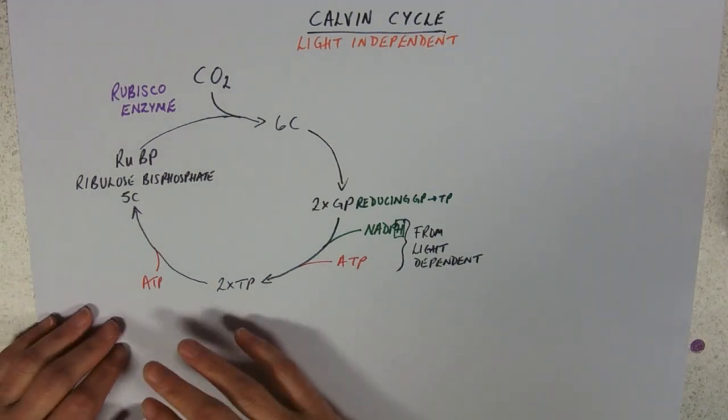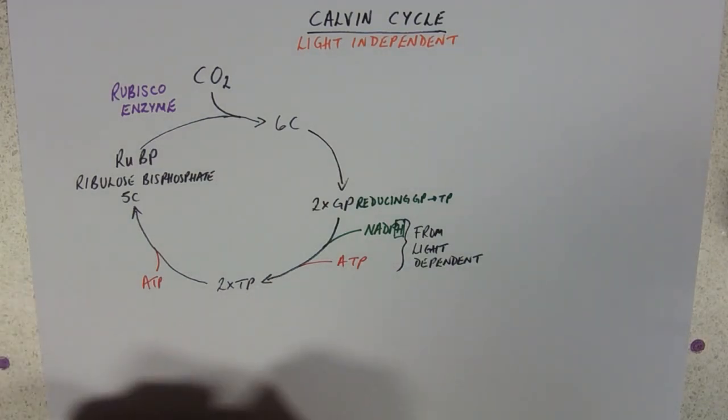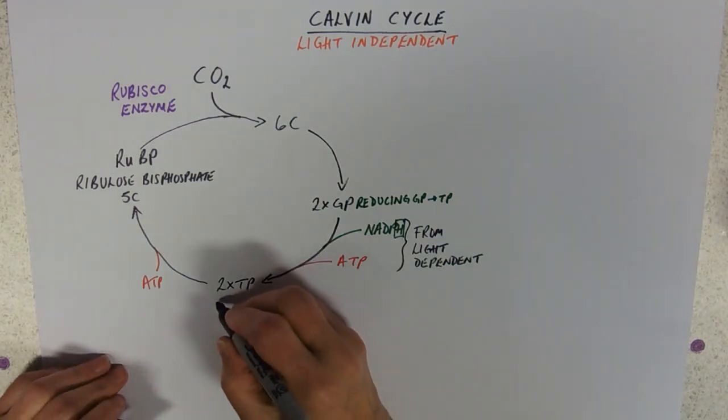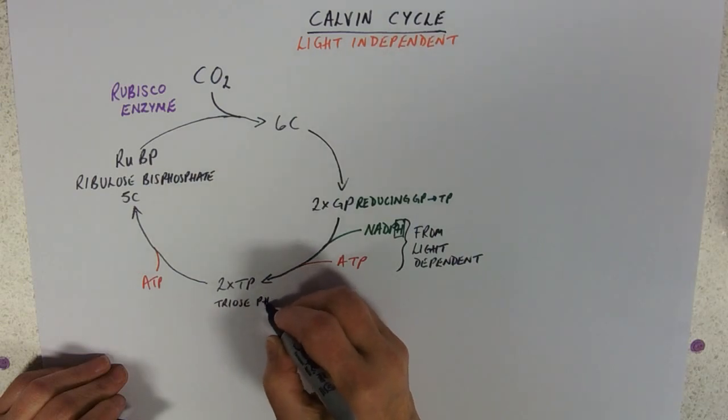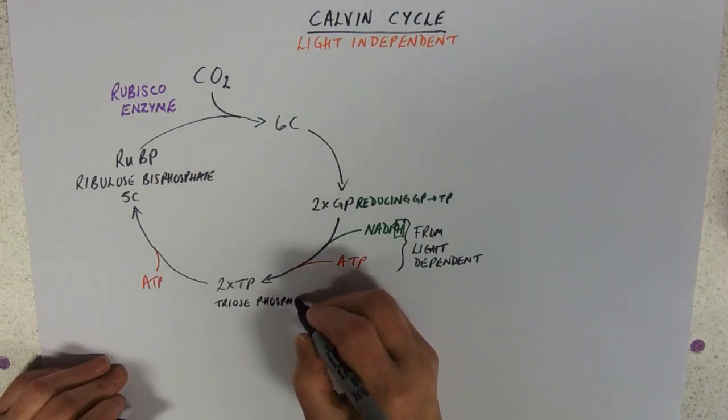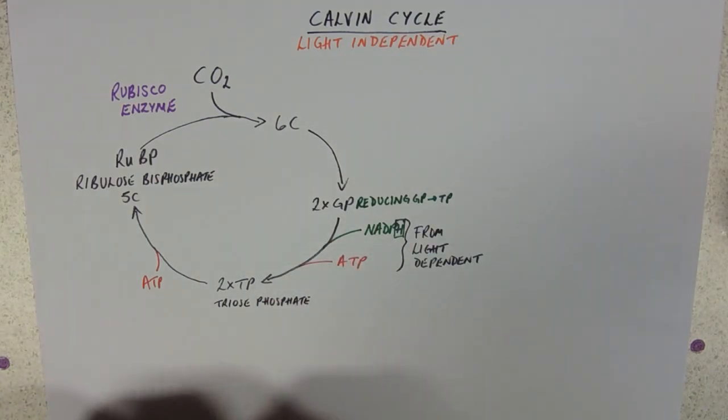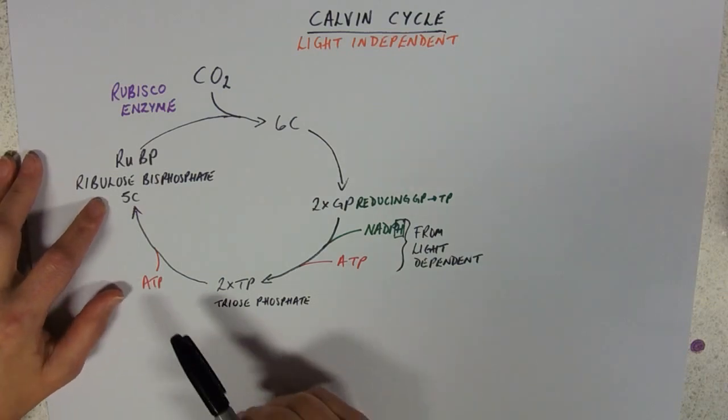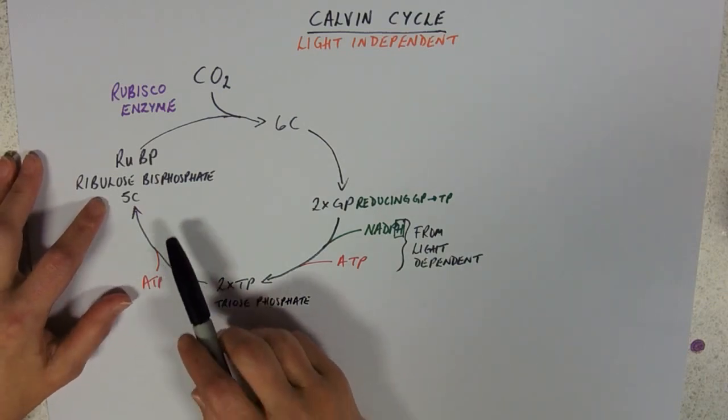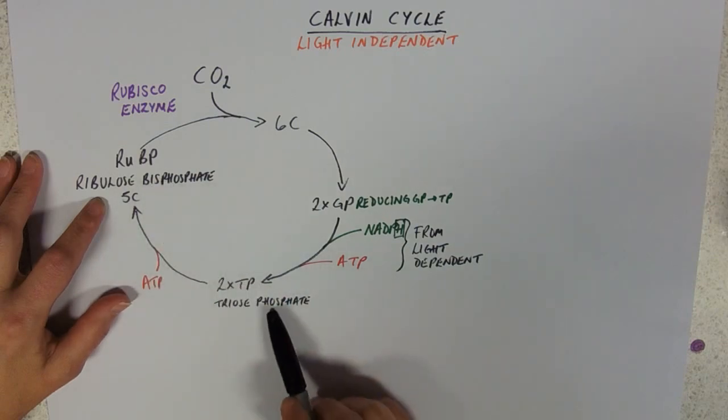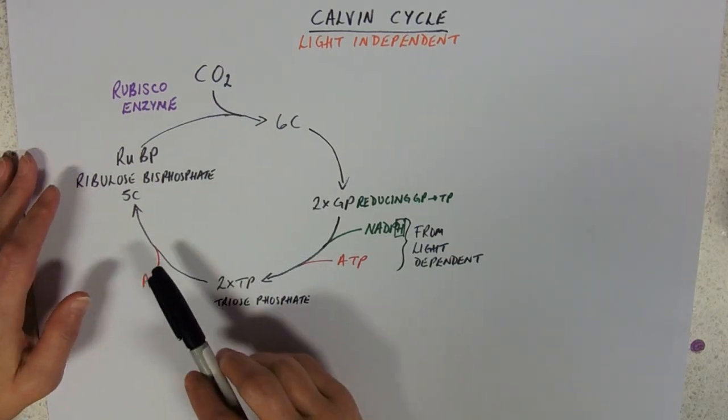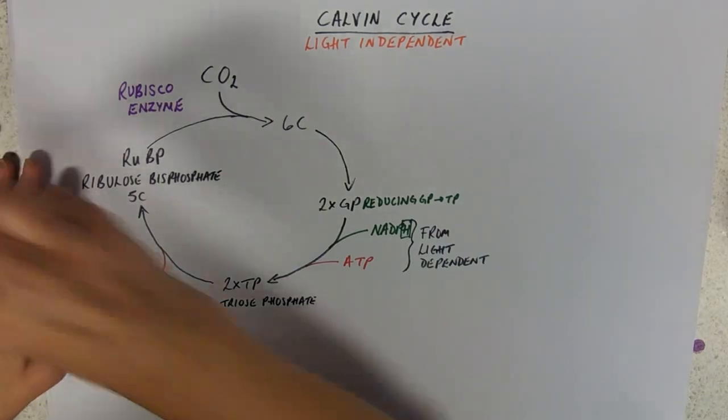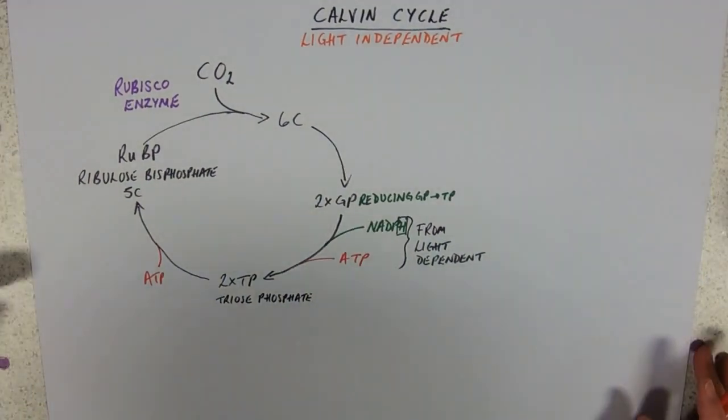Moving round then, we've got TP and it won't be a big surprise if I tell you that this is triose phosphate. Not many other things in biology that TP could stand for. And we're making this big chemical, ribulose bisphosphate from that, and again we're using ATP for that. Bi means two, this has got one phosphate, so what ATP must be providing is some phosphate for phosphorylation.